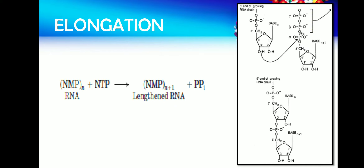The three prime OH acts as a nucleophile and attacks the alpha phosphate of the incoming nucleotide, leading to the release of pyrophosphate. This OH attacks the alpha phosphate to form a phosphodiester bond, and one nucleotide gets attached to another. The second nucleotide then has a three prime OH group which acts as a nucleophile to attack the alpha phosphate of the next incoming nucleotide, releasing pyrophosphate. Like this the RNA chain keeps growing.